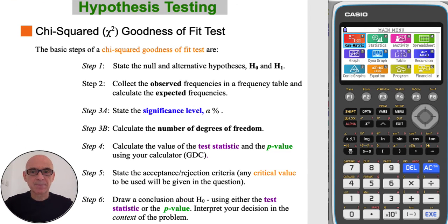The basic steps of a chi-squared goodness of fit test are Step 1, to state the null and alternative hypotheses. Step 2, to calculate the expected frequencies. Step 3, to state the significance level and to calculate the number of degrees of freedom.